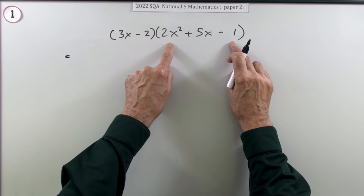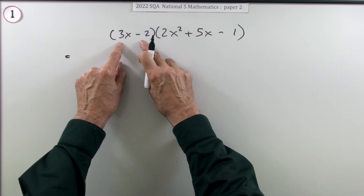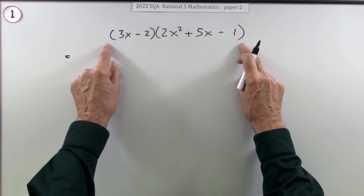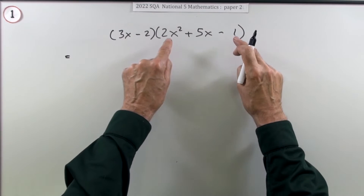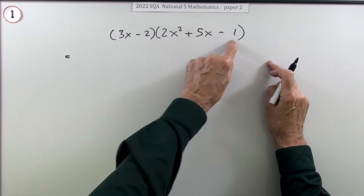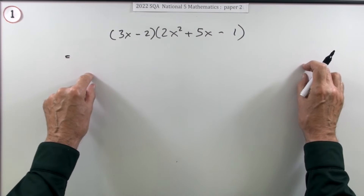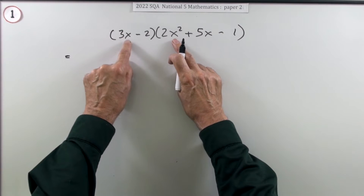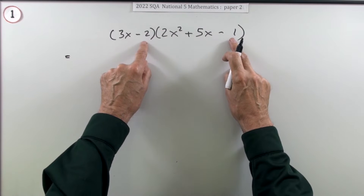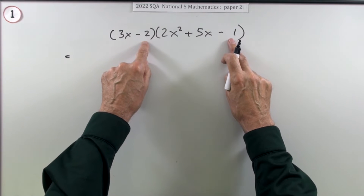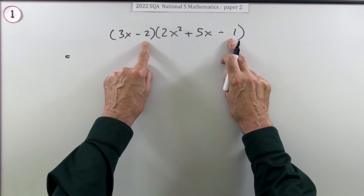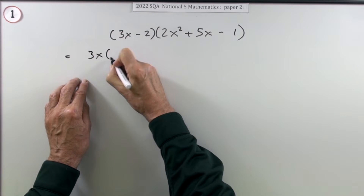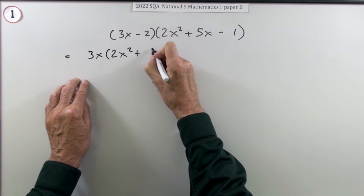That bracket multiplying this bracket means everything in this bracket has to multiply everything in that bracket — that's why the brackets are there. So the 3x is going to multiply all three terms and the 2 is going to multiply all three terms. There are going to be six products, but they won't all be different. The biggest product will be an x cubed and the smallest will just be the constant, so there are only four different types of terms.